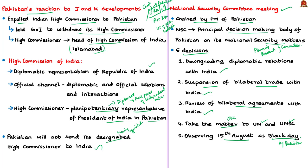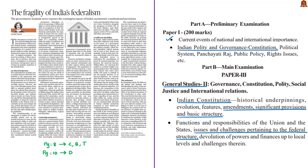It is believed that the National Security Committee decisions have changed the dynamics of bilateral relations between India and Pakistan. The next editorial speaks about asymmetric federalism, the arguments made against it, and the flexible nature of Indian federalism explained with theory and historical events. The relevant syllabus is given for reference.